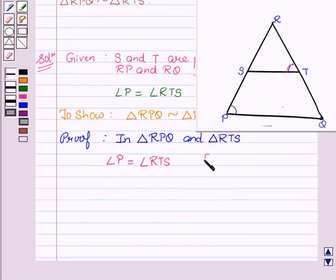And angle PRQ is equal to angle TRS since it is a common angle for both the triangles. So we can say angle PRQ equals angle TRS.